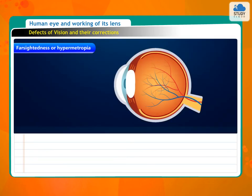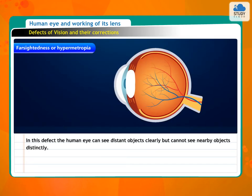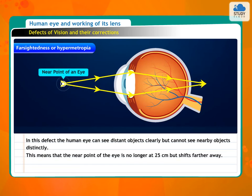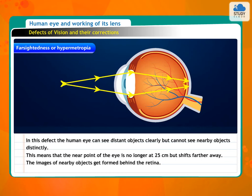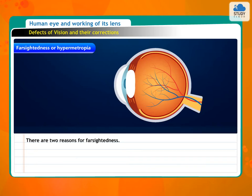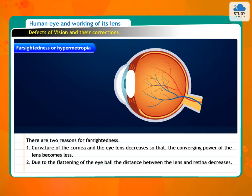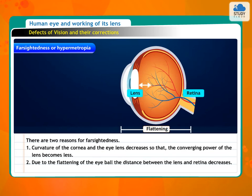2. Farsightedness or Hypermetropia. In this defect, the human eye can see distant objects clearly but cannot see nearby objects distinctly. This means that the near point of the eye is no longer at 25 cm but shifts farther away. The images of nearby objects get formed behind the retina. There are two reasons for farsightedness: 1. The curvature of the cornea and the eye lens decreases so that the converging power of the lens becomes less. 2. Due to the flattening of the eyeball, the distance between the lens and the retina decreases.